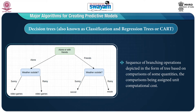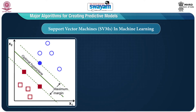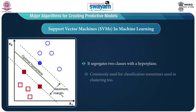The next one is the decision tree, also known as classification and regression tree or CART — this is a sequence of branching operations depicted in the form of a tree, based on comparisons of some quantities with assigned unit computational cost. The next one is the support vector machine, which is used in machine learning for classification — it segregates two classes with a hyperplane and is commonly used for classification, sometimes for clustering also.